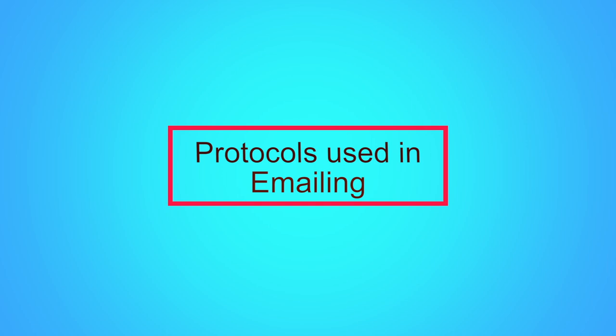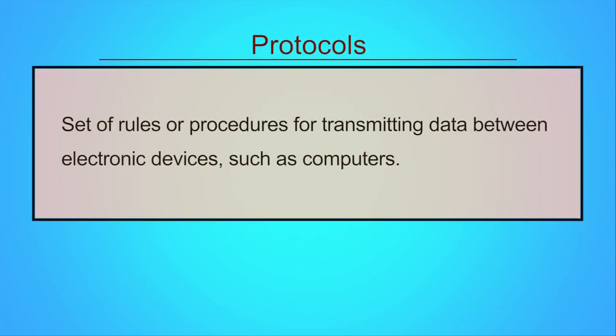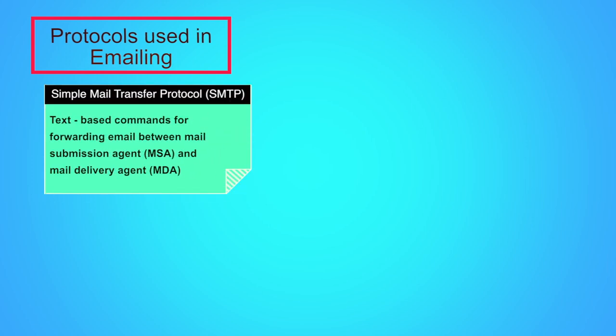Let us now look at various protocols used while providing email services. Unless we follow protocols, emails from two different providers will never reach each other. Protocols in computer science are a set of rules or procedures for transmitting data between electronic devices such as computers. Emailing is possible over varied networks by following common protocols. Simple Mail Transfer Protocol — SMTP — is a protocol which defines text-based messages or commands for forwarding email between the mail submission agent and the mail delivery agent, i.e. MSA and MDA.